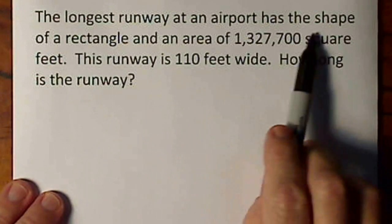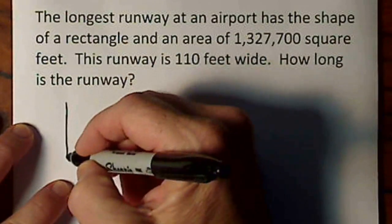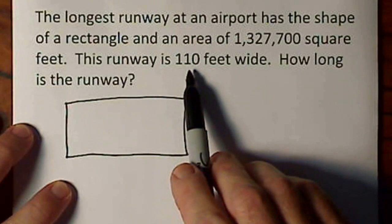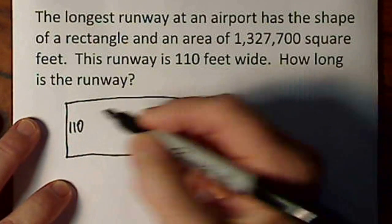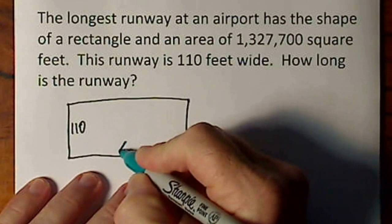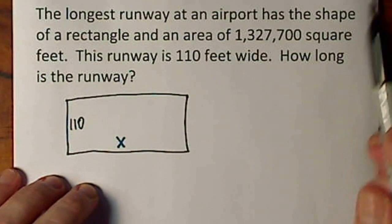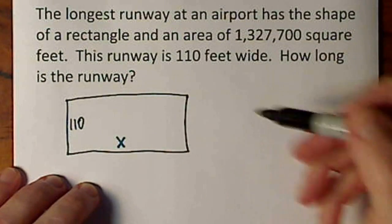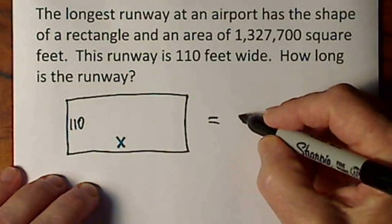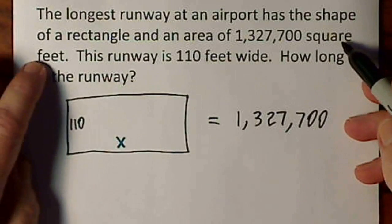We're looking at an airport with a runway the shape of a rectangle. So we'll go ahead and draw the rectangle. And they tell us that it's 110 feet wide. And we don't know how long it is, so we'll just call that X for some number of feet. And the area right here is 1 million, all that. So I'm just going to say that is equal to 1,327,700, and this is square feet.